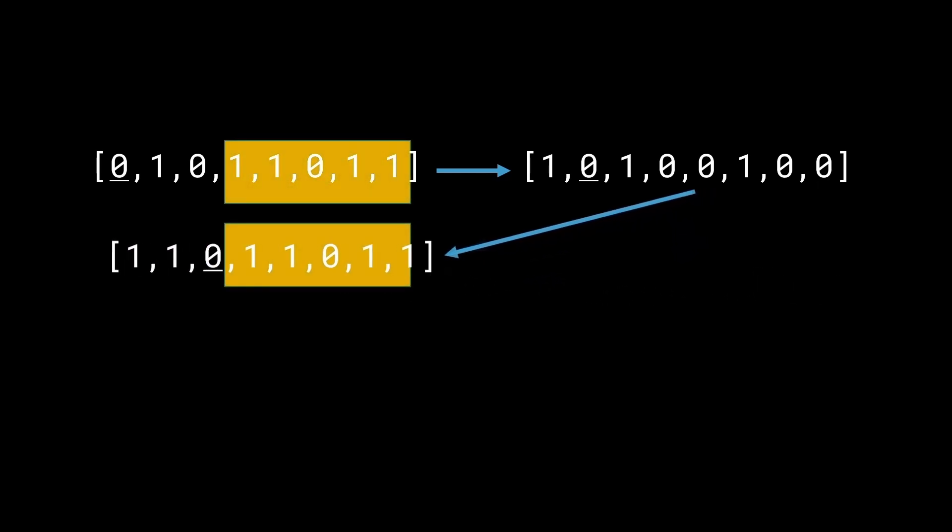Alright. If you place both of these side by side, you'll realize that both of these [0,1,0], [1,1,0,1,1], and [1,1,0,1,1,0,1,1] have this yellow part of the string repeated. Both of them have this yellow part of the array repeated. Now, what does that mean?